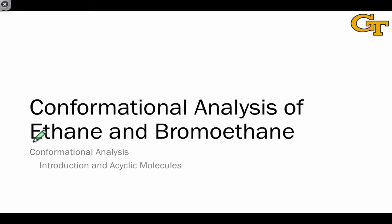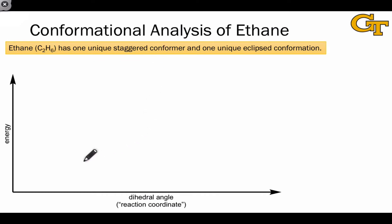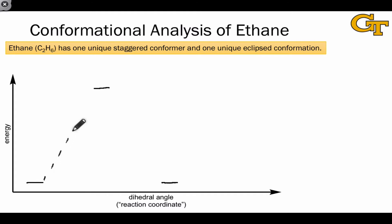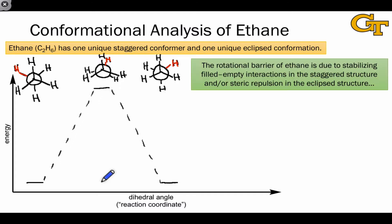Here we'll focus on the conformational analysis of ethane and bromoethane. As we've seen previously, ethane has one unique staggered conformer, which is an energy minimum, and one unique eclipsed conformer, which is an energy maximum. Drawing another staggered conformer on the right lets us depict conformational change from one staggered conformer to another. The difference in energy between the staggered and eclipsed conformations can be viewed as an activation energy, delta G double dagger, and for ethane this difference is about 3 kilocalories per mole.